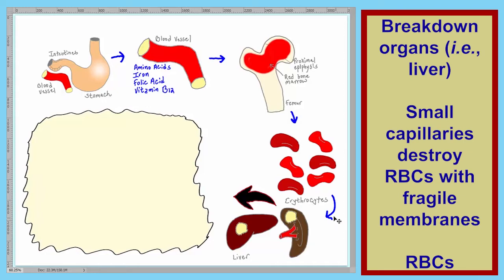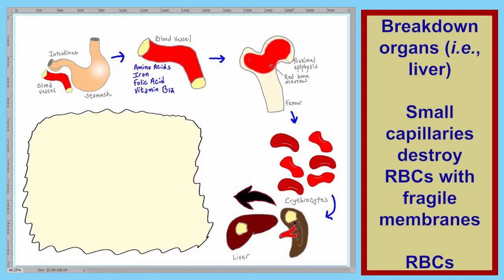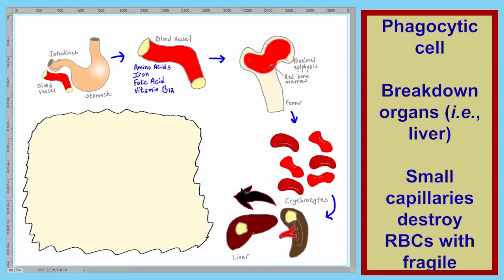These organs are the liver and the spleen. Within these organs, we're going to have cells that actually endocytose or phagocytose the red blood cells to break them down. We've blown that cell up here. We'll bring a red blood cell here and show the byproducts of its breakdown.